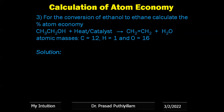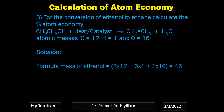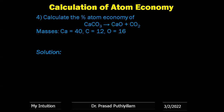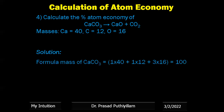Example 3: Conversion of ethanol to ethene by heating in presence of a catalyst. Formula mass of ethanol (reagent) = 46; formula mass of ethene = 28. Percentage atom economy = 28/46 × 100 = 60.9%. Example 4: Decomposition of calcium carbonate to give calcium oxide and carbon dioxide. Atomic masses: Ca = 40, C = 12, O = 16. Formula mass of CaCO₃ = 100; formula mass of CaO = 56. Percentage atom economy = 56/100 × 100 = 56%.